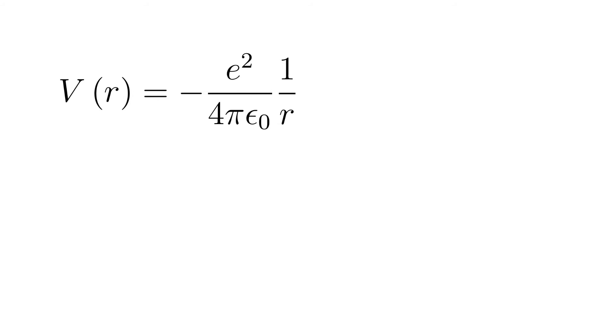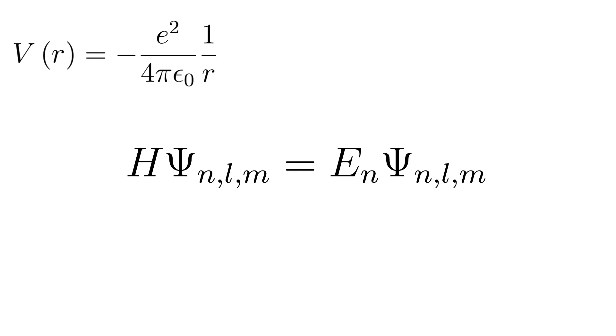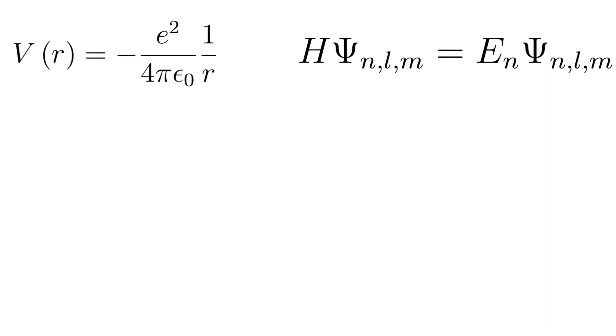We now look for wave functions psi which solve the Schrödinger equation, the equation h times psi nlm equals en times psi nlm, with the Hamilton operator h equals h bar squared over 2me times delta plus v of x.